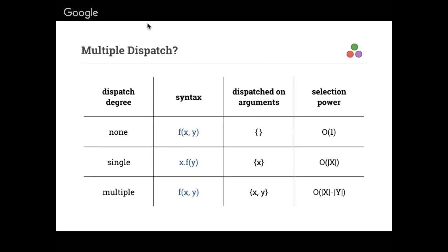One consequence of multiple dispatch is we go back to the traditional function call syntax, because X isn't special anymore. This is one of the first stumbling blocks for people coming from OO languages. Multiple dispatch is not all sunshine and puppies — people really like the dot notation, which reads naturally as subject-verb-object, chains left to right, and has nice namespacing properties. We lose those nice things, but hopefully the benefits more than compensate.